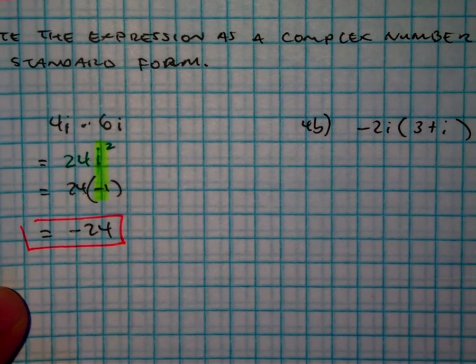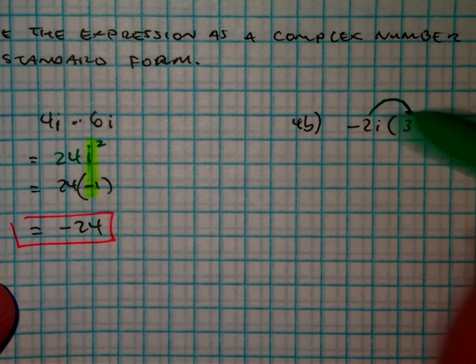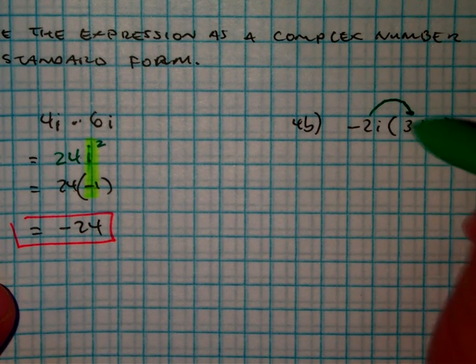Then over here, we just have to do what? We need to distribute. This is a monomial, one term times two terms. This is a binomial.